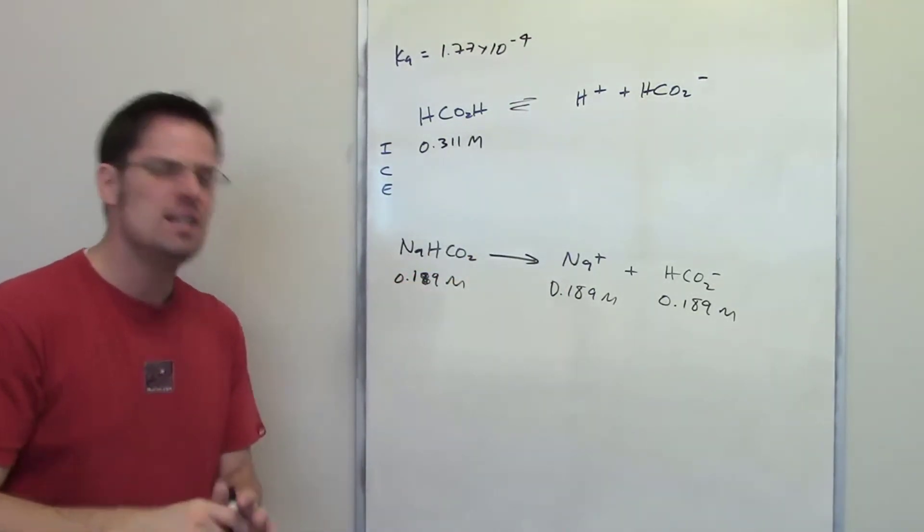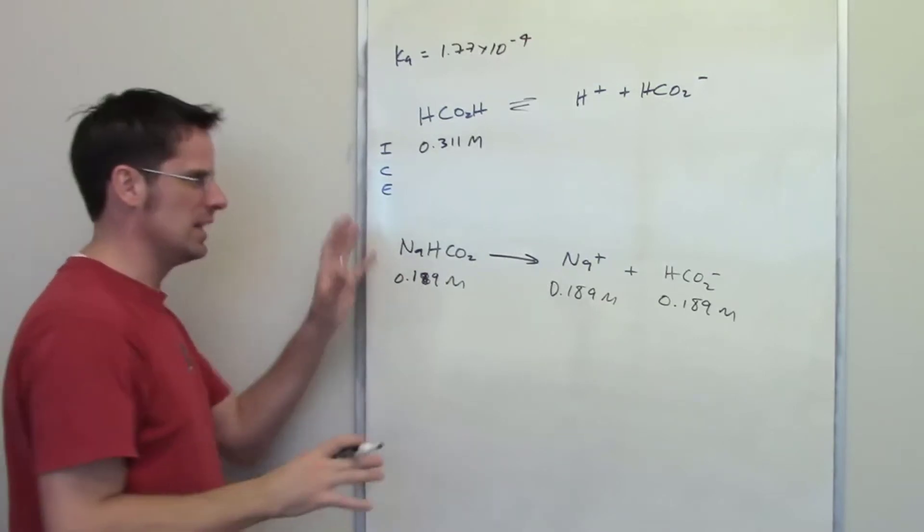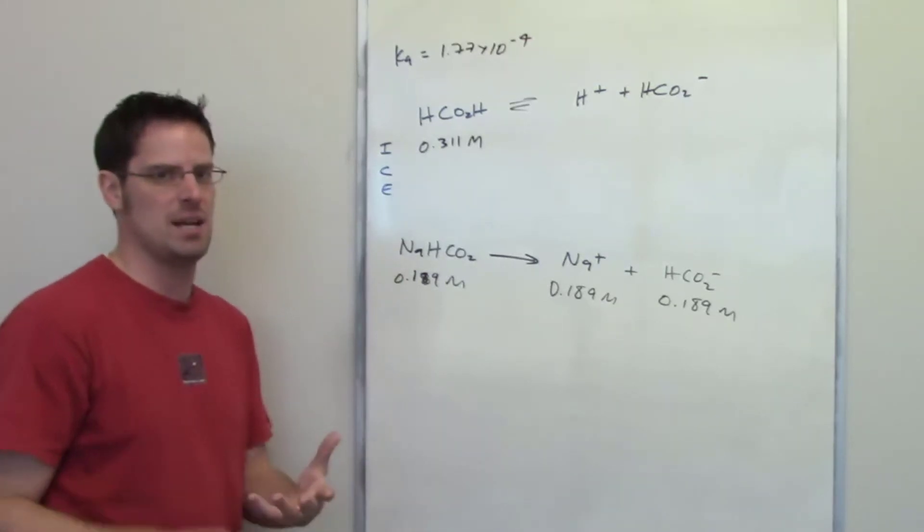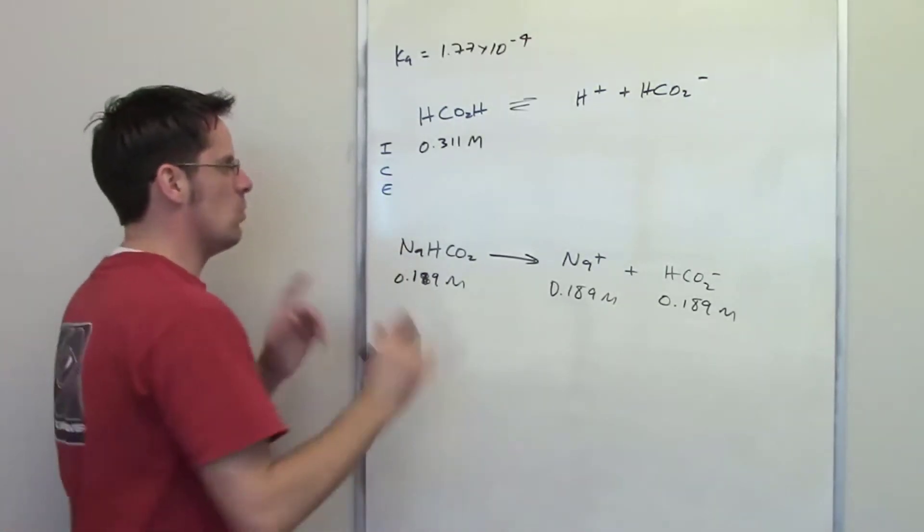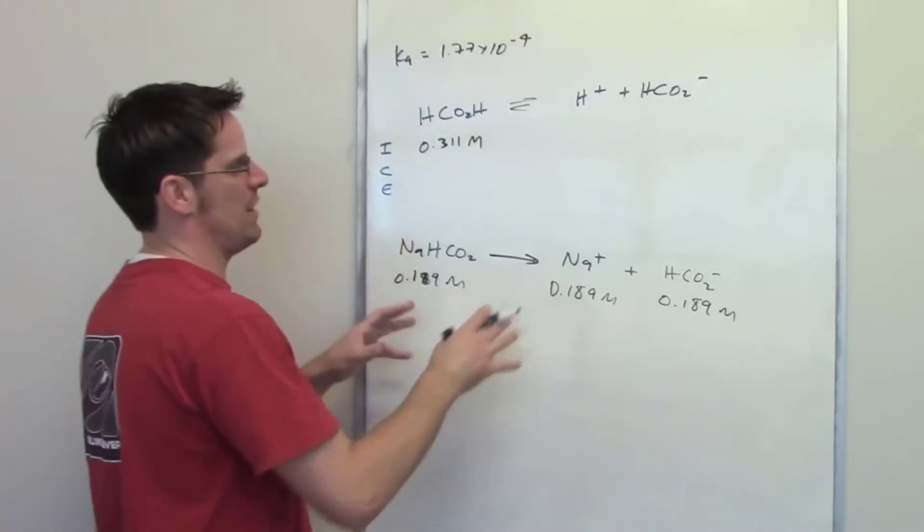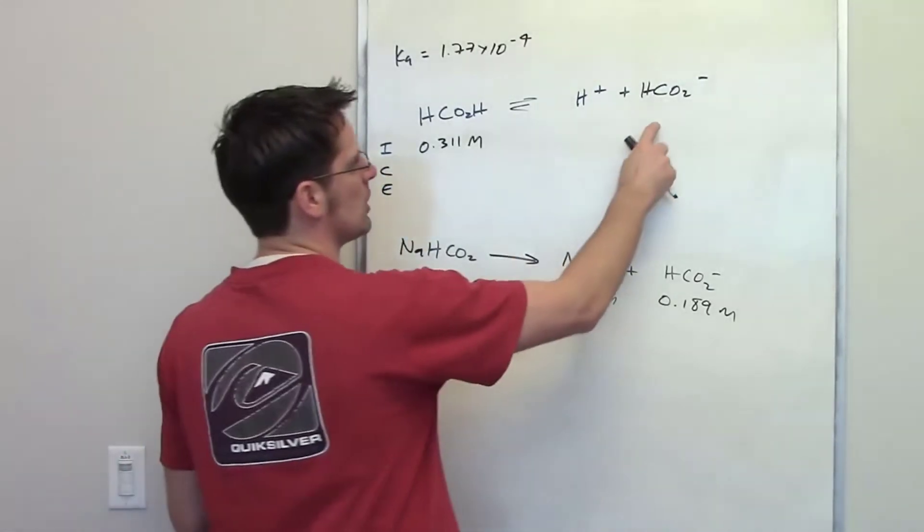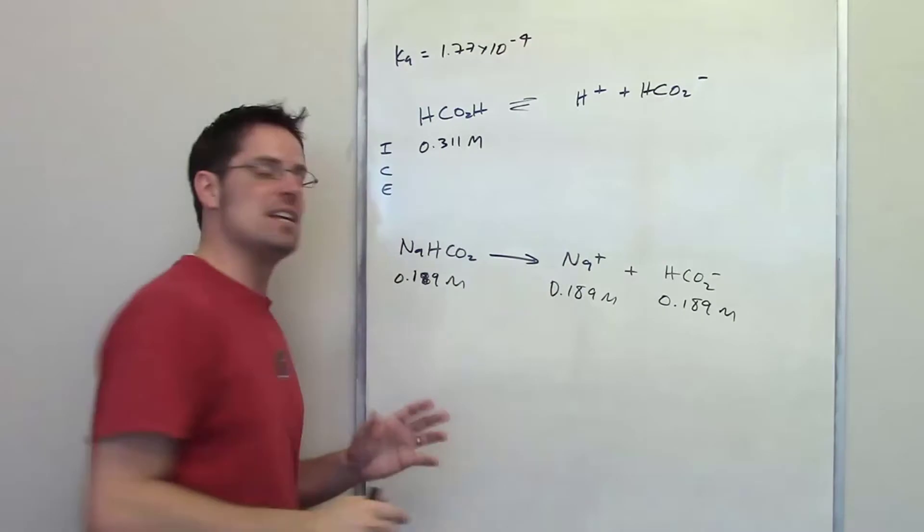And thereby alter the final concentration of H plus. Does that make sense? It's the common ion effect, and it's a little bit more complicated than the traditional ICE table, but not by much. The one way really in which the common ion effect changes things is that the initial concentration of this thing is not zero.